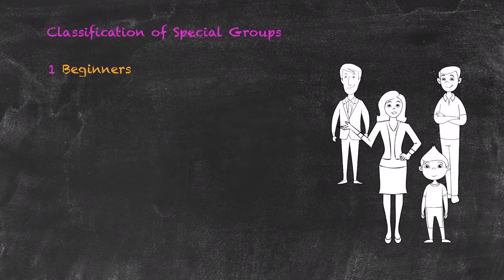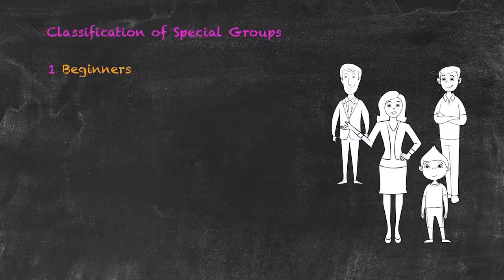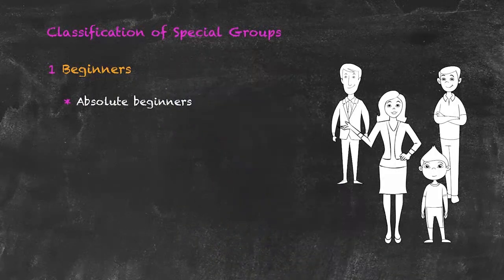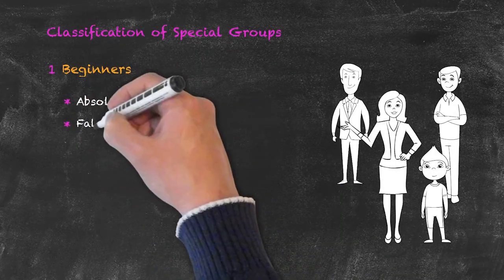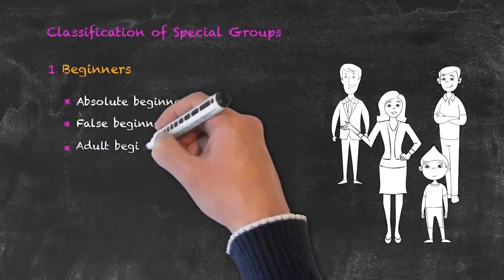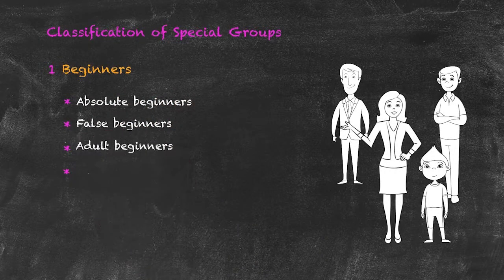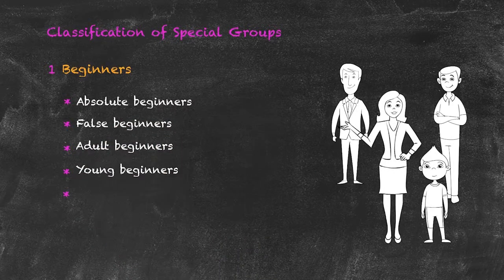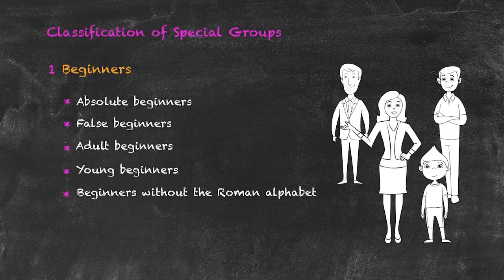When looking at beginners, bear in mind that beginners can be of any age. We should break this category into subcategories: the absolute beginner, false beginners, adult beginners, young beginners, and beginners without the Roman alphabet.